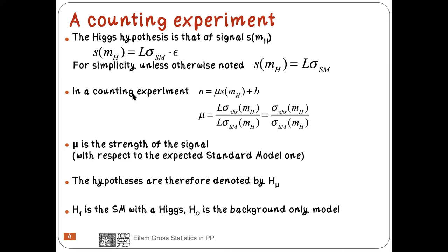Due to statistical fluctuations, even if the signal is there, mu should be one but it can fluctuate. If there's no signal, mu would be zero. Mu is called the signal strength. There is the expected one and there is the observed one. If there's only background, the expected mu is zero; if there's signal, the expected mu is one. Mu is the ratio between the observed cross section and the standard model predicted one — sigma observed over sigma standard model.